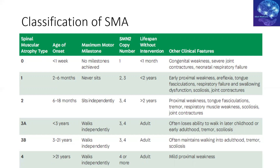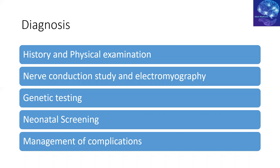SMA3 is divided into subtypes: SMA3A for onset from 18 months to three years, and SMA3B for onset between three and 21 years. These patients are able to achieve independent walking, may have SMN2 copy numbers of three and four, usually live into adulthood, but often lose the ability to walk in later childhood or early adulthood and tend to develop scoliosis. SMA4 patients tend to have a more normal lifespan, with mild weakness but mostly normal function.